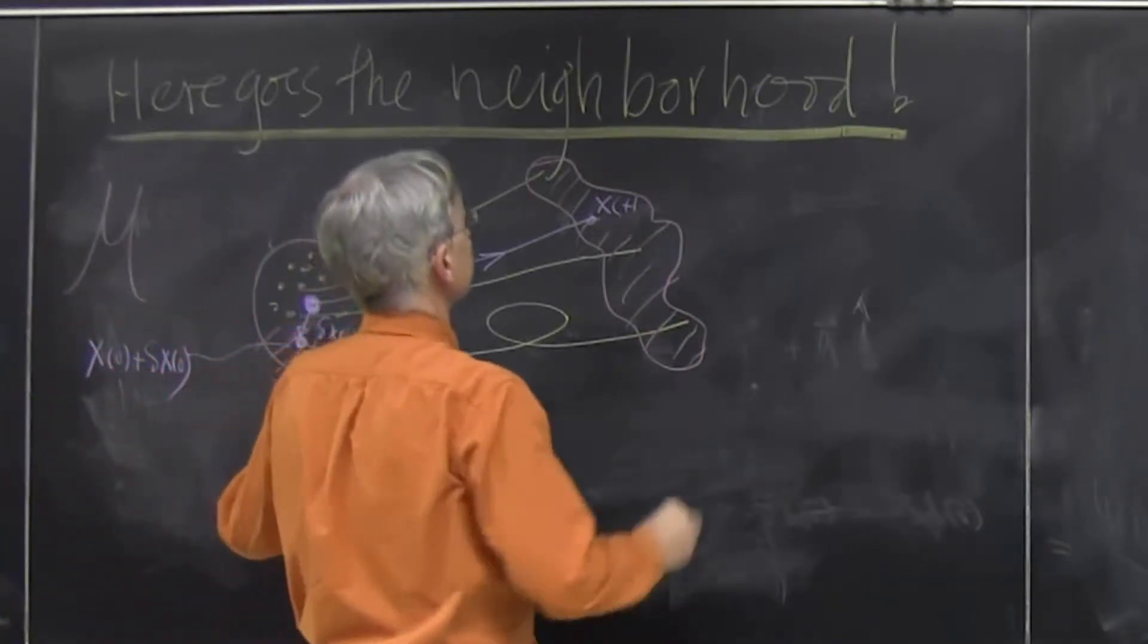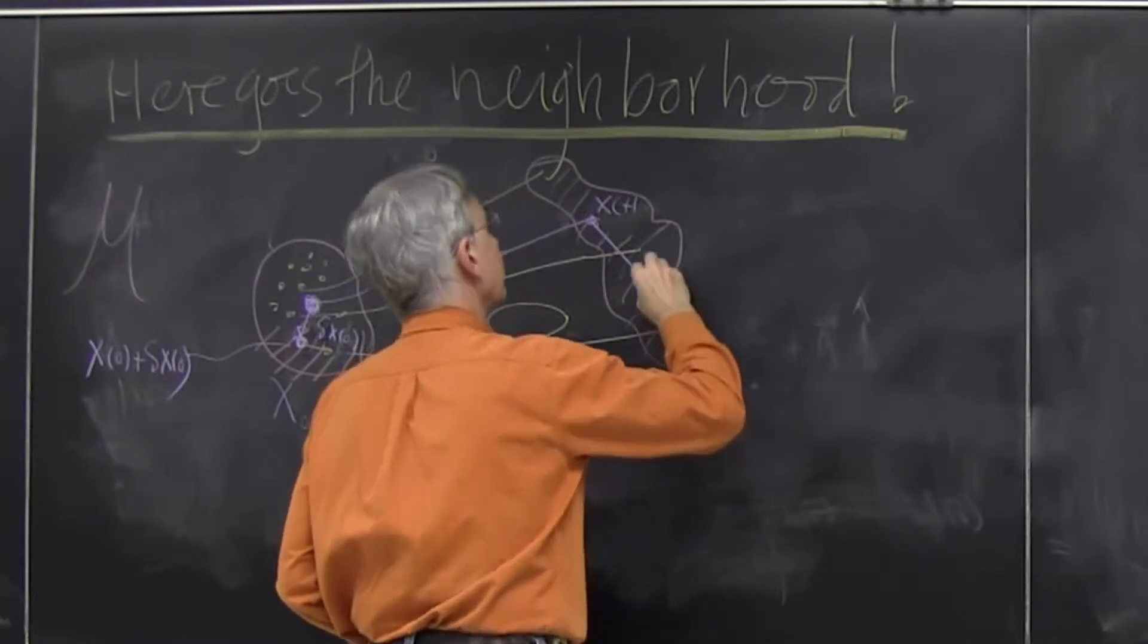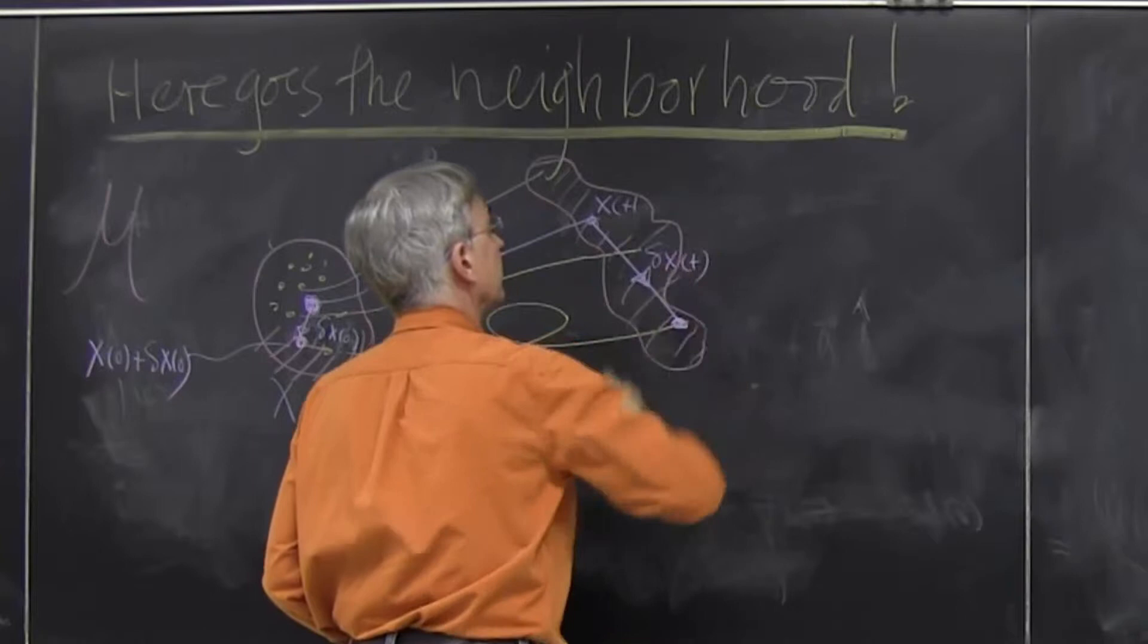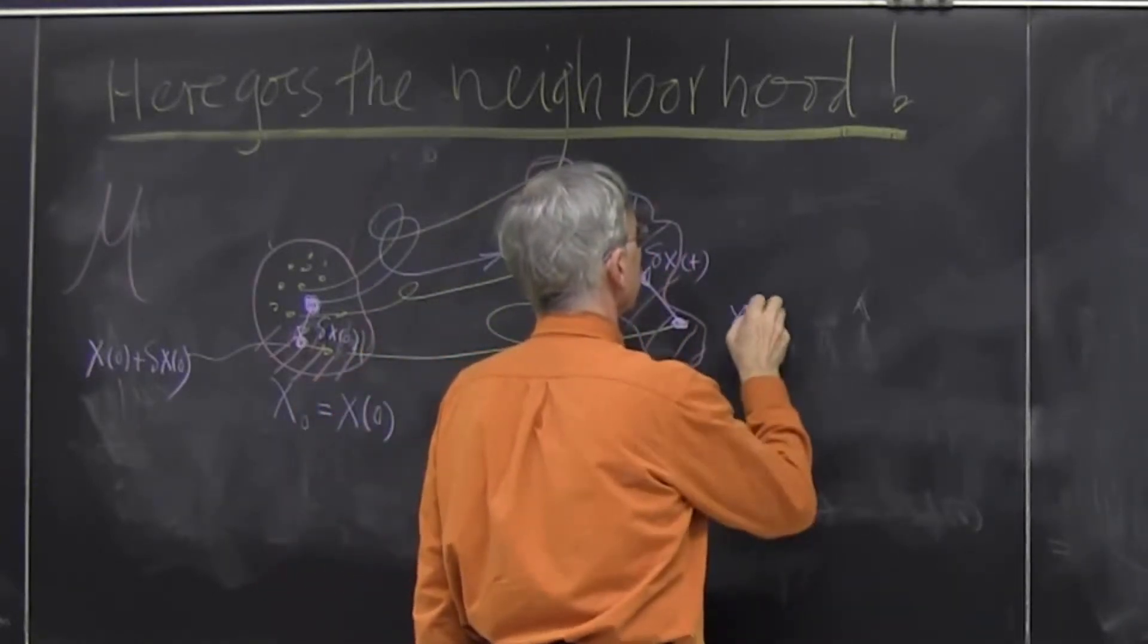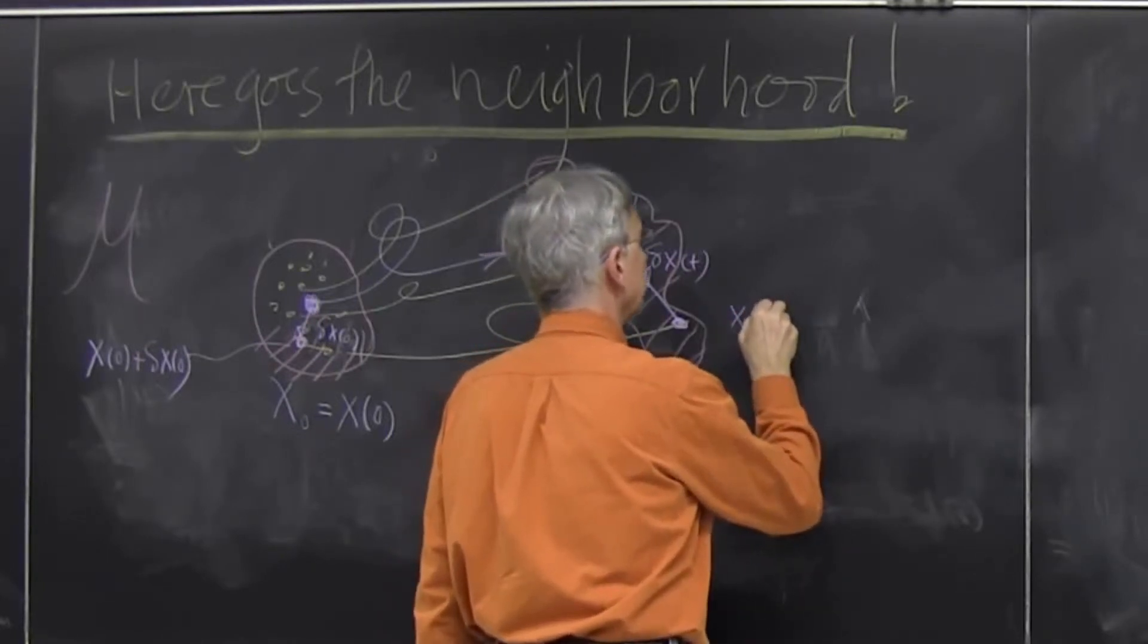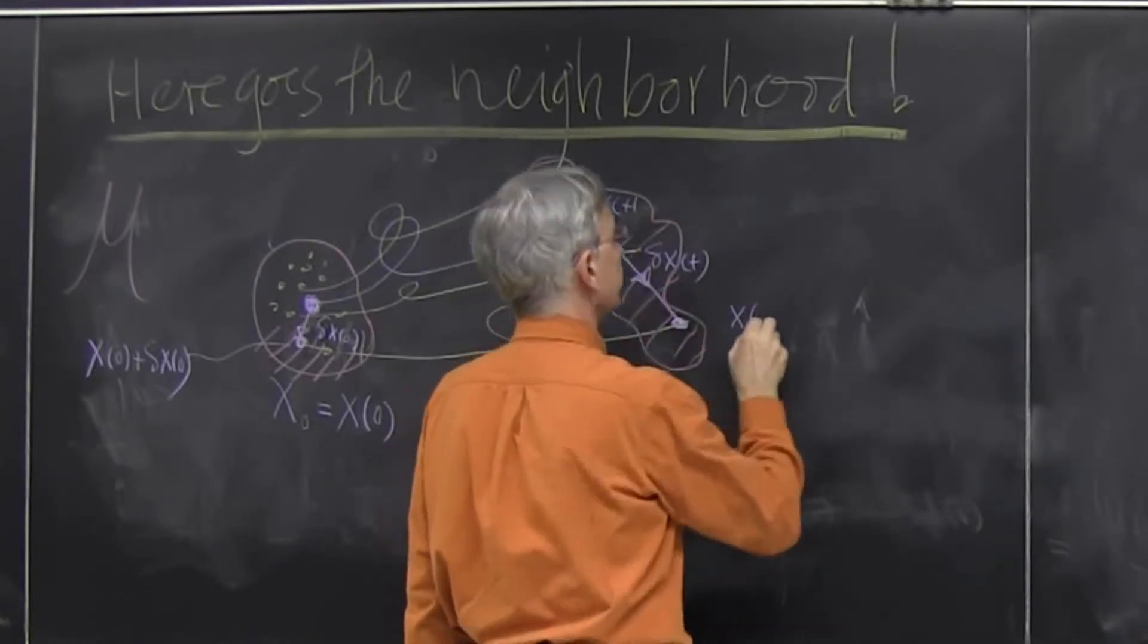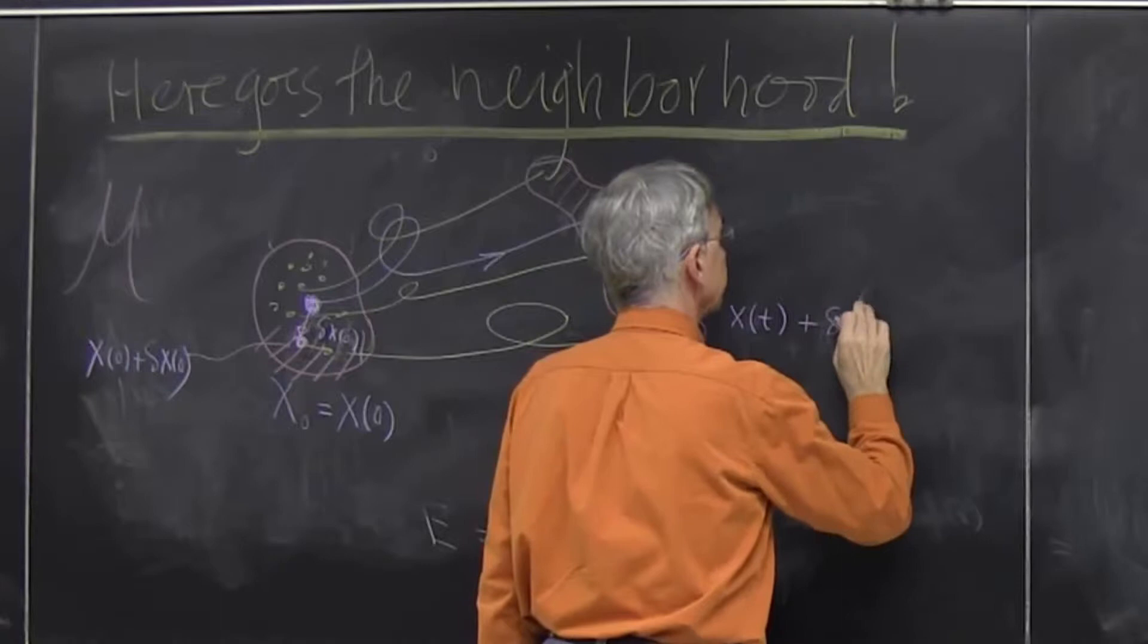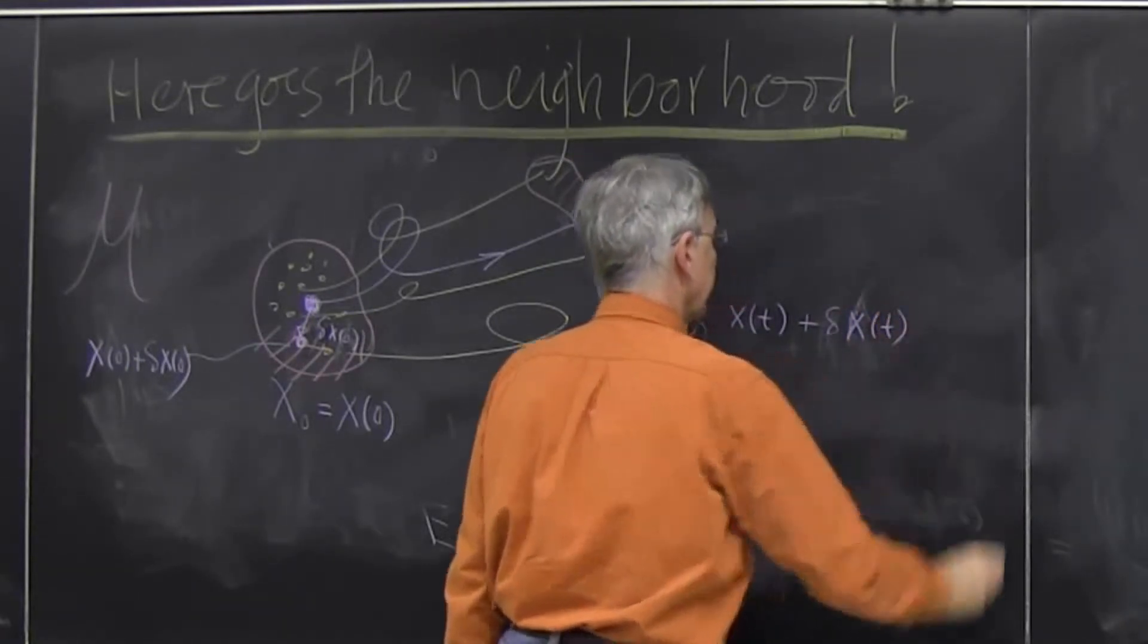And at time t later, this difference vector delta x will change. So this point will now be x, the motion of the center of the neighborhood plus delta x time t.